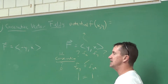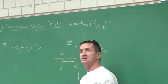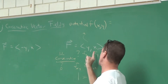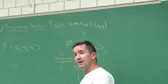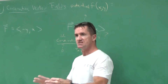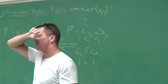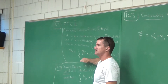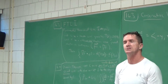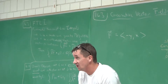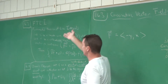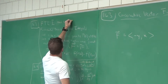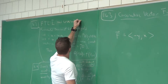The simple check to see whether or not a vector field in two-dimensional space is conservative: take the derivative of the x-component with respect to y, and see if it equals the derivative of the y-component with respect to x. If so, the vector field is conservative, and you can use the fundamental theorem of line integrals — it'll turn a 10-minute problem into a 30-second problem.